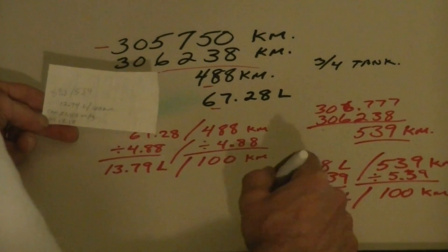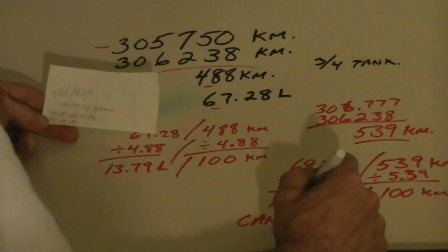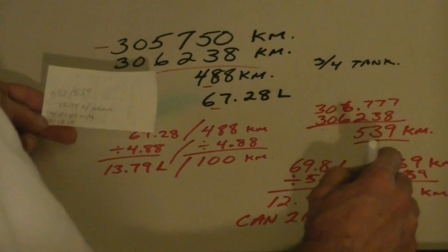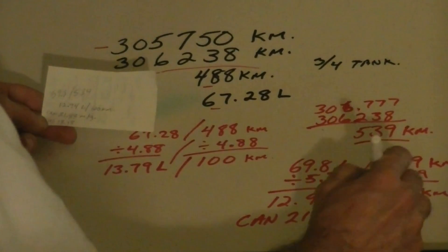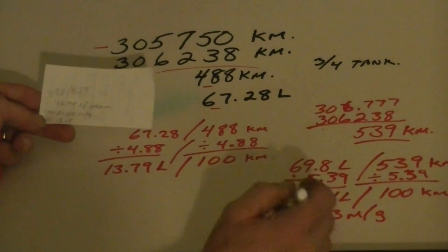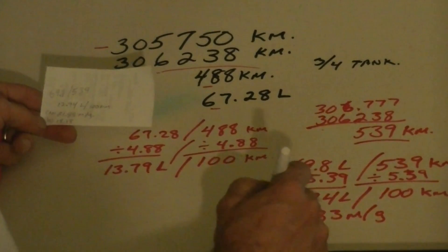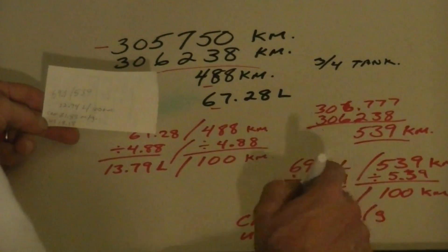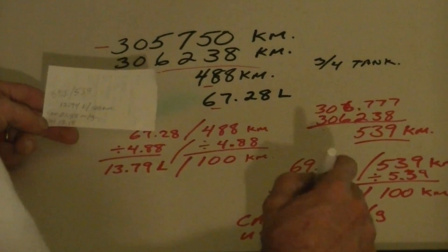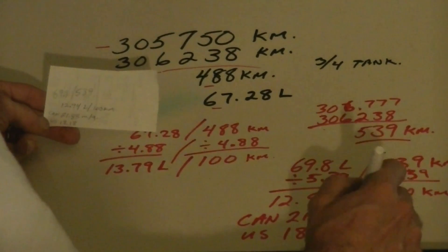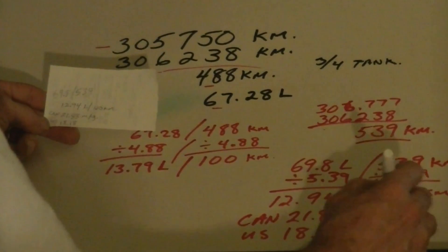The second calculation worked out to 12.94 liters per 100 kilometers. In Canadian gallons that's 21.83 miles per gallon, and in U.S. gallons it worked out to 18.18 miles per gallon.